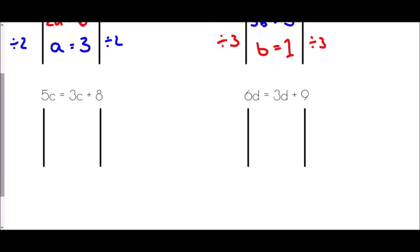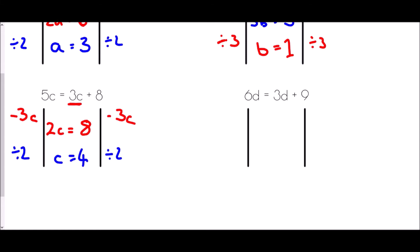In the third question, 5c equals 3c plus 8, the smallest amount of c is 3c, so that is what I'm going to subtract. 5c take away 3c is 2c, and on the right hand side I'm left with just the 8. So if 2c equals 8, I divide by 2 to get c on its own — c equals 4.